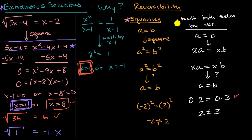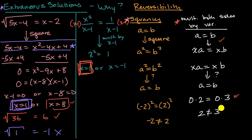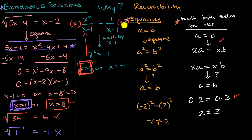The key here is that we multiplied both sides by a variable expression — in this case, x minus one. You can do that; it is a legitimate algebraic operation. It's completely analogous to what we saw earlier: just because zero times two equals zero times three does not mean two equals three. It's analogous because we multiplied by a variable expression that takes on the value zero when x equals one.